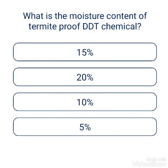Question: What is the moisture content of thermite proof DDT chemical? Options: 15%, 20%, 10%, 5%. The answer is 5%.